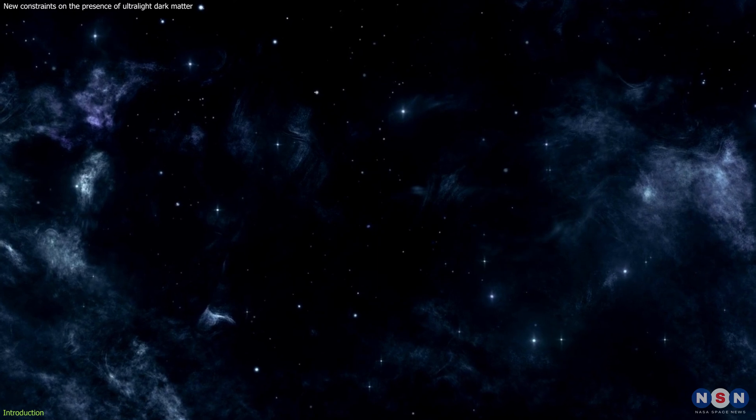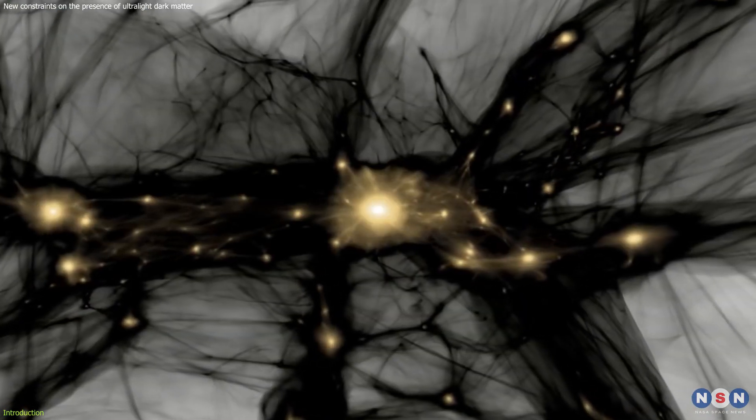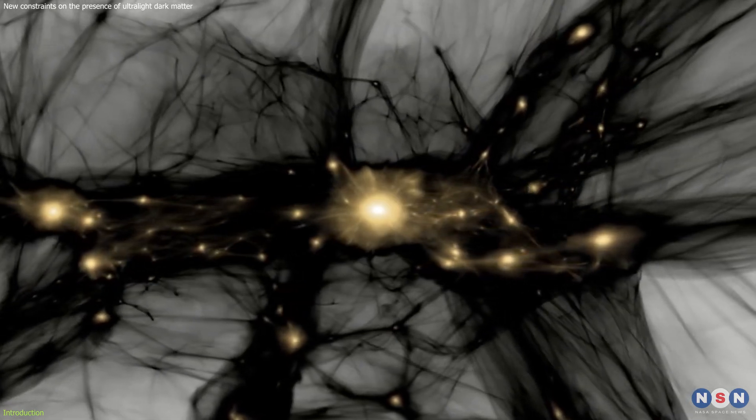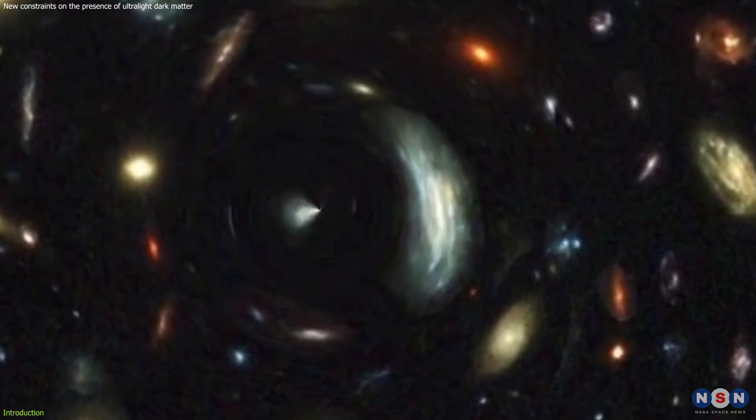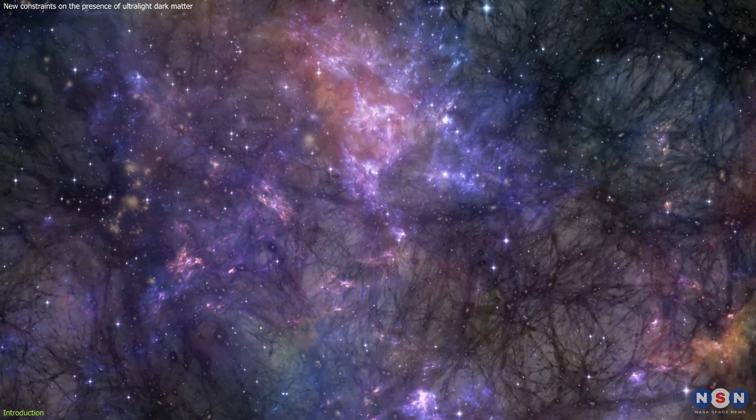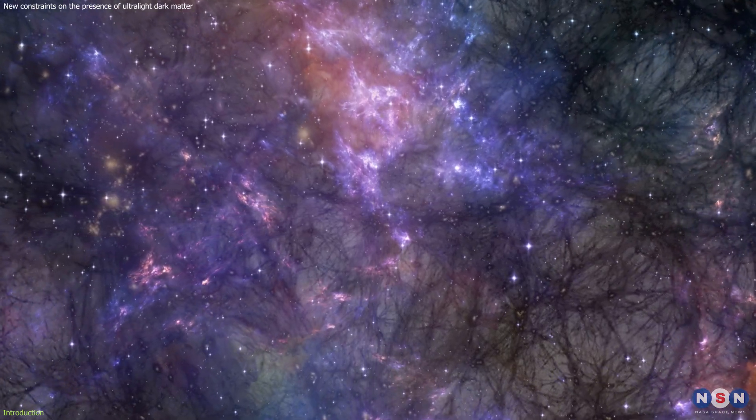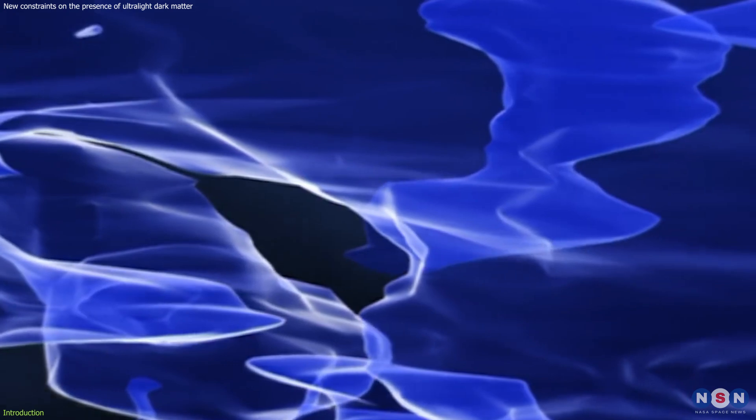We all agree that dark matter is one of the biggest mysteries of modern physics. It is a form of matter that does not emit or reflect any light, but we know it exists because it has a gravitational effect on the visible matter around it. Scientists estimate that dark matter makes up about 85% of the total matter in the universe, but they have no idea what it is made of.